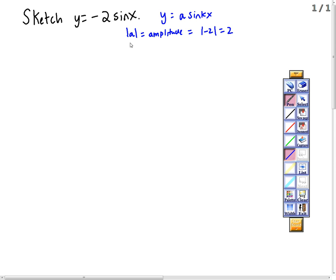We see that k is 1, which means the period is 2π over k, so now it's just 2π because k is 1.